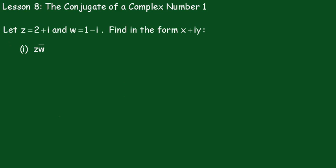Lesson 8. The conjugate of a complex number. Number 1. We'll let z equal 2 plus i and w equal 1 minus i. We have to find in the form of x plus iy, z times the conjugate of w.